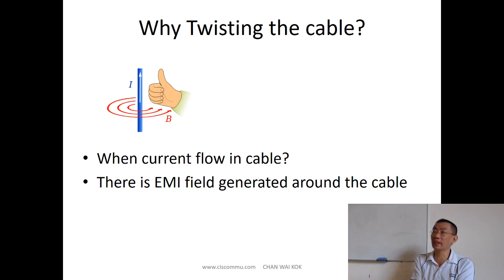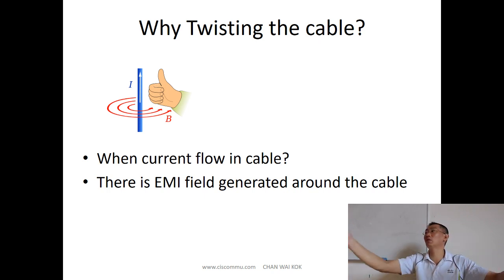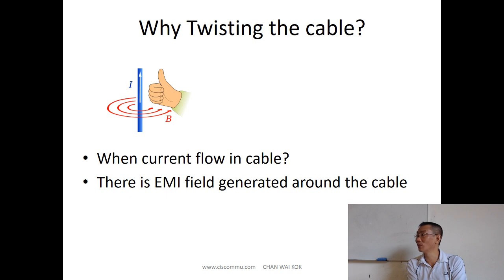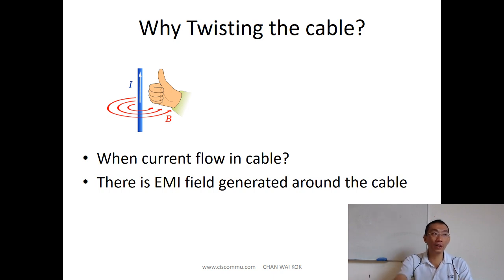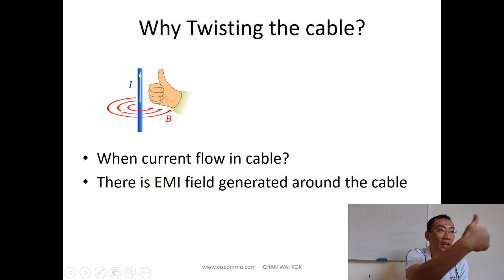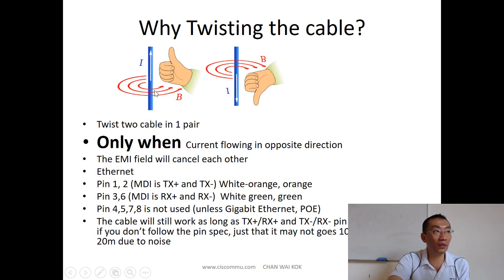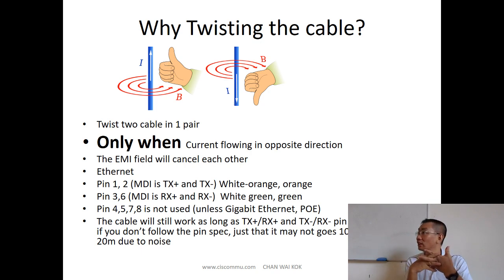Why do you need to twist the cable? Why not just lay it straight? From physics class, when current flows through a wire, an electromagnetic field is generated around it — the right-hand thumb rule. If you have two wires carrying current in opposite directions, the EMI fields cancel out each other, giving you less noise. That's why you twist them together. The two wires must be from the same pair so their EMI fields cancel out.